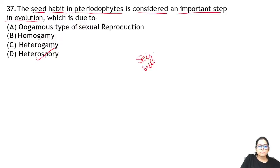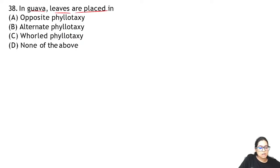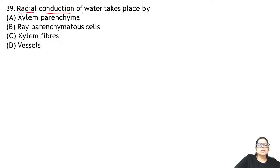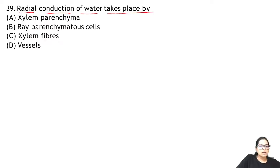Question 38: in guava, leaves are placed in — the position of leaves is called phyllotaxy. Guava has opposite phyllotaxy. Question 39: radial conduction of water takes place by — radial conduction is carried out by ray parenchyma cells.